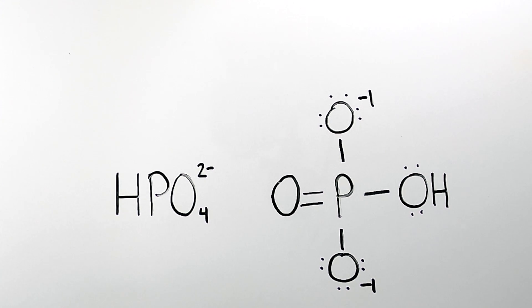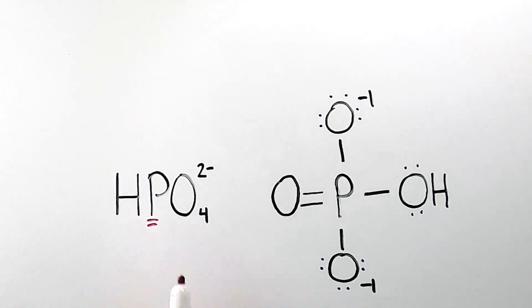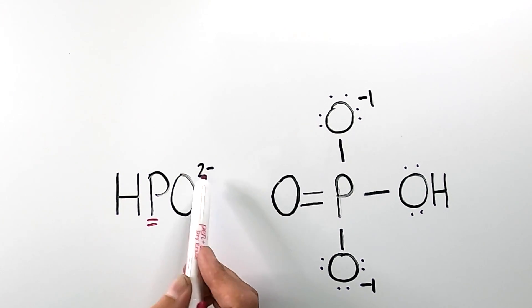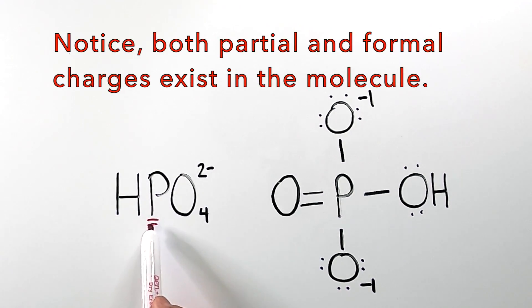Oxidation number is quite different from partial charge and formal charge in that it determines how many electrons an atom within a compound is contributing or obtaining during bond formation. Let's look at an example that'll help discern the difference between formal charge and oxidation number. We're going to find the oxidation number of phosphorus in hydrogen phosphate. First, notice that hydrogen phosphate has a negative two molecular charge — this is the formal charge of the compound, but it has nothing to do with the oxidation number of phosphorus in this compound.